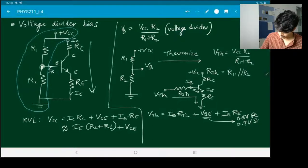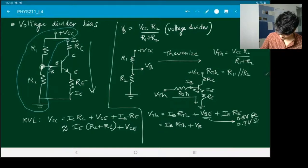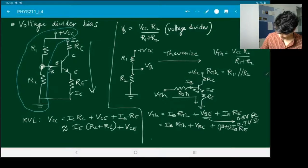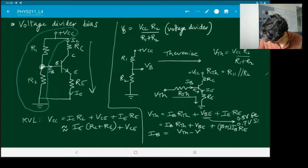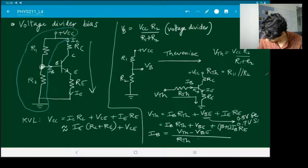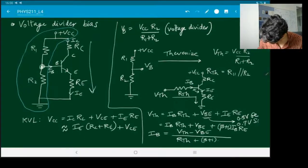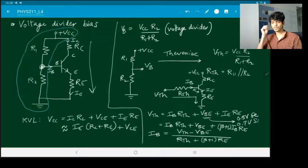However, we can simplify this other part of it. So this is Ib Rth plus Vbe plus β plus one times Ib Re. So from here you can get your base current, which is going to be Vth minus Vbe divided by Rth plus β plus one Re. So here's how you analyze a circuit which is in voltage divider bias.